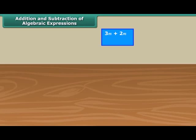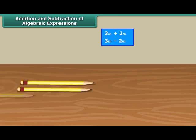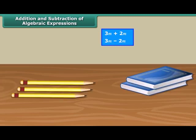We can only add or subtract like terms. But why is it so? Think of it like this. On a table, we have three pencils and two books. We cannot add the three pencils to the two books because they are not the same kind of objects.